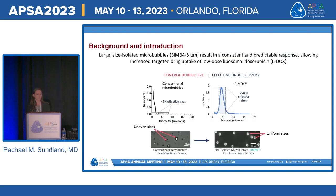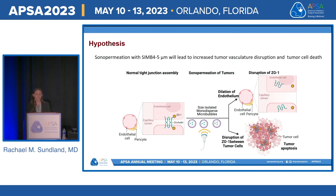Polydispersed micro-bubbles were originally developed as ultrasound contrast agents for echo. The micro-bubble response to ultrasound depends on its size. Large, size-isolated micro-bubbles — SIMB-4-5 — have an enhanced, consistent, and predictable response compared to polydispersed micro-bubbles, which range from 2 to 10 micrometers. This allows for improved targeted uptake of circulating drugs such as L-DOX. We hypothesized that sono-permeation with SIMB-4-5 would lead to increased tumor cell death, enhanced disruption of tight junction proteins, and enhanced disruption within the tumor vasculature compared to polydispersed micro-bubbles.